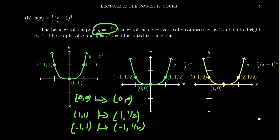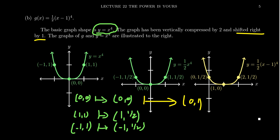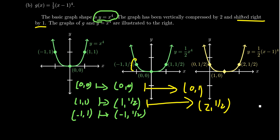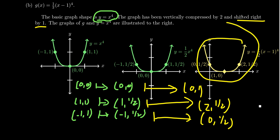What is the x minus one doing? Because we have x minus one inside of the horizontal zone, this represents a horizontal shift to the right by a factor of one. So we're going to take this entire picture and move everything to the right by one. The origin moves to the point one comma zero. The point one comma one-half moves to two comma one-half. The point negative one comma one-half moves to zero comma one-half.